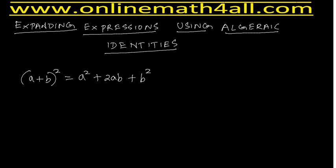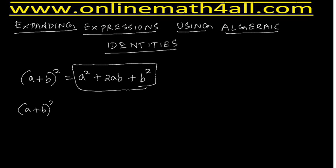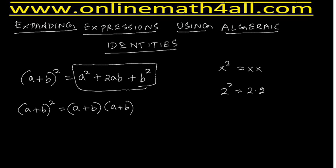We all know about this identity. Now let us understand how we get the result a² + 2ab + b² on the right side for a + b whole square on the left side. If you have a + b whole square, it can be written as (a + b) times (a + b). This is just like x² = x times x, or 2² = 2 times 2. So a + b whole square equals (a + b)(a + b).